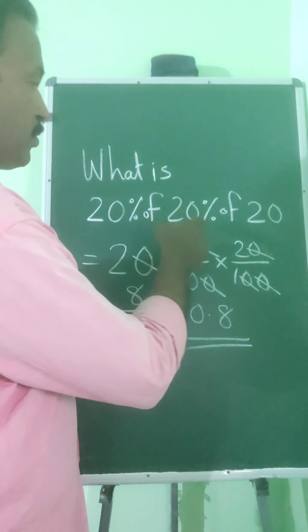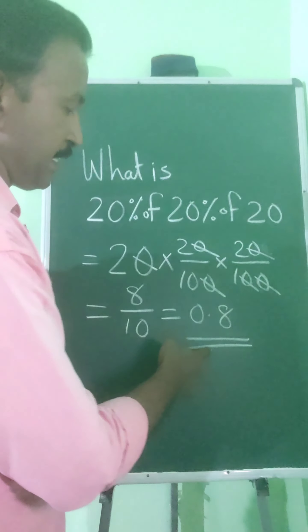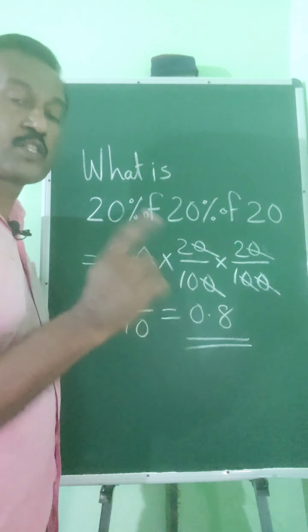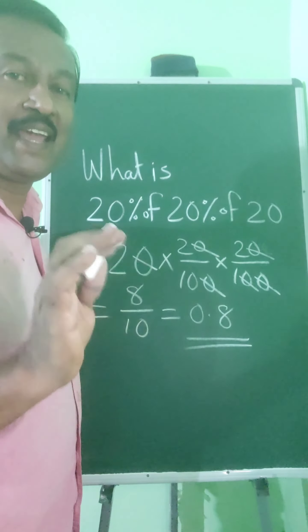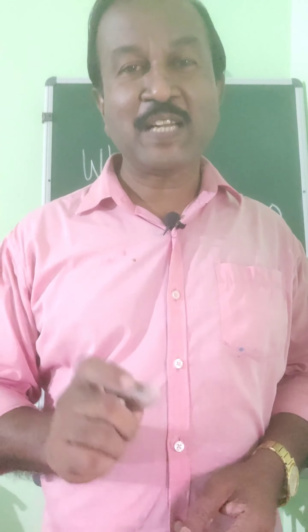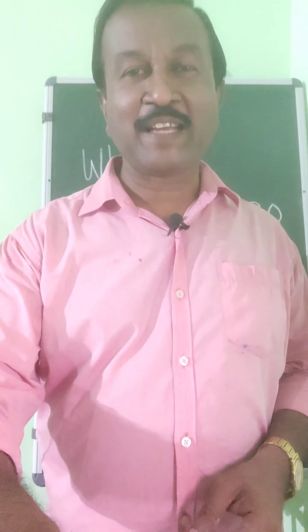So 20% of 20% of 20 equals 0.8. How is 20% of 20? Thank you.